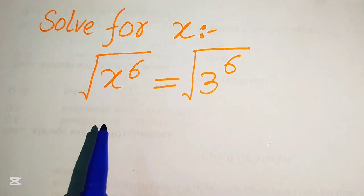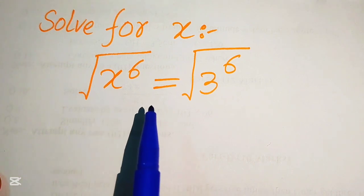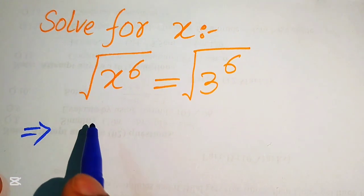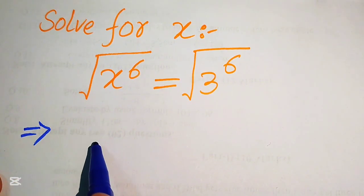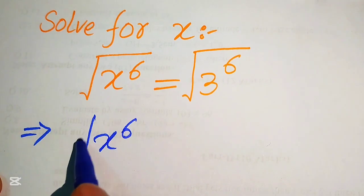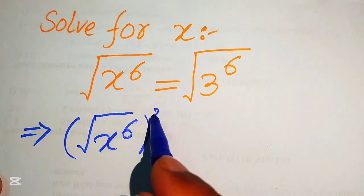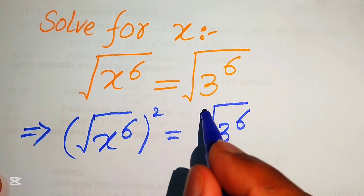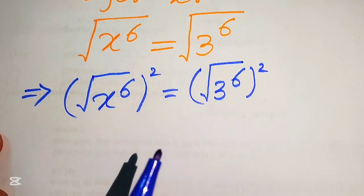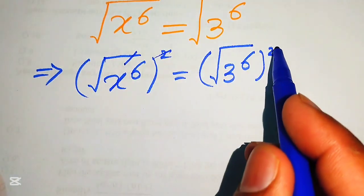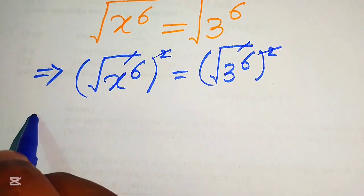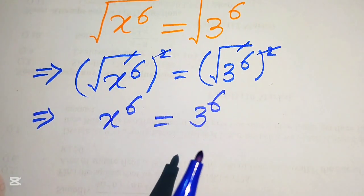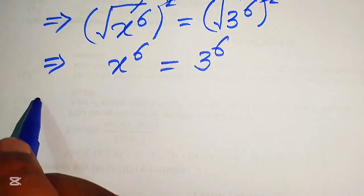First we need to eliminate this square root on both sides. In order to eliminate this square root we need to take the squares on both sides. So it will be written as the square root of x to the power of 6, squared, equals the square root of 3 to the power of 6, squared. The 2 and square root cancel on both sides and we obtain x to the power of 6 equals 3 to the power of 6.